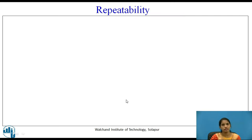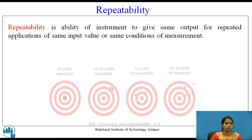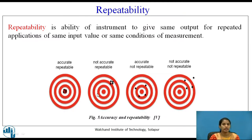Repeatability: The name itself indicates it is the ability of a system or instrument to give the same output for repeated applications of the same input value or same conditions of measurement. If an instrument gives repeated readings of the same value for the same input, that is known as repeatability. Figure 5 shows four diagrams: the first is accurate and repeatable, the second is not accurate but repeatable, the third is accurate but not repeatable, and the fourth is not accurate and not repeatable.